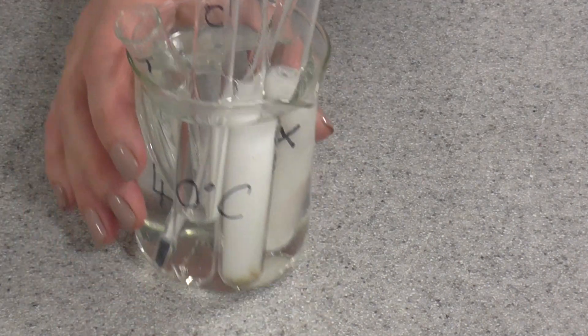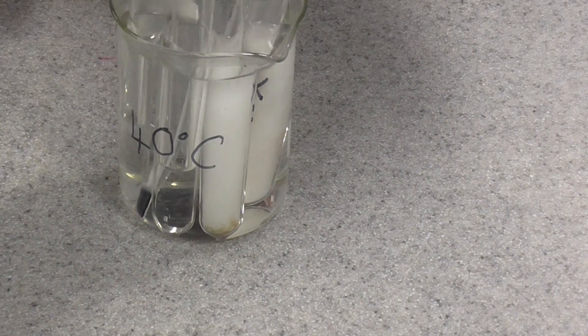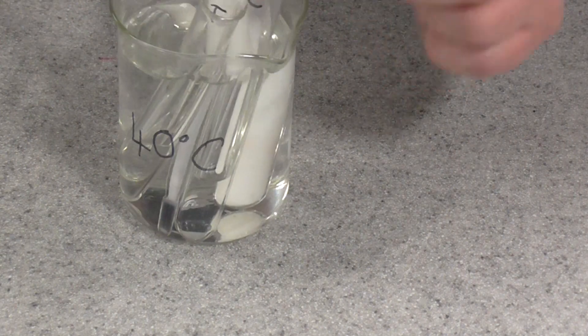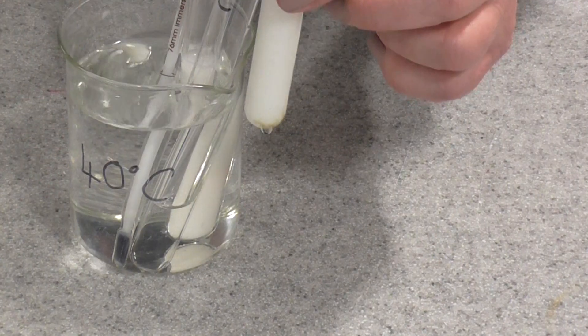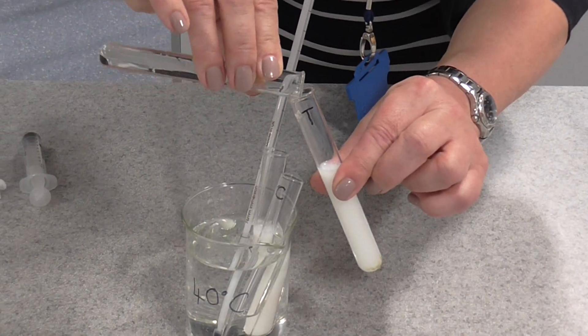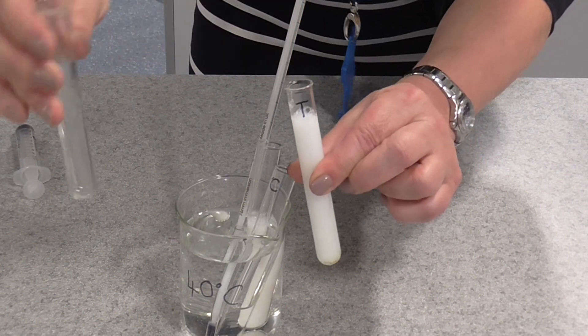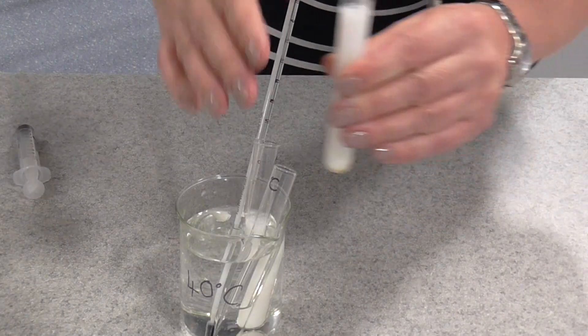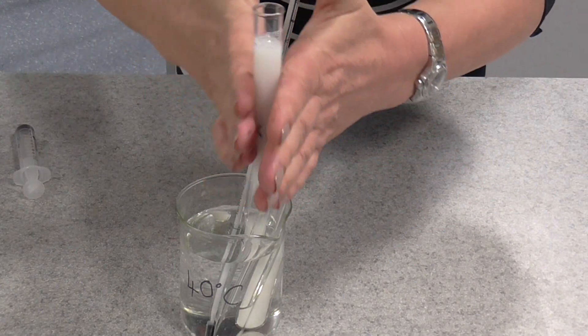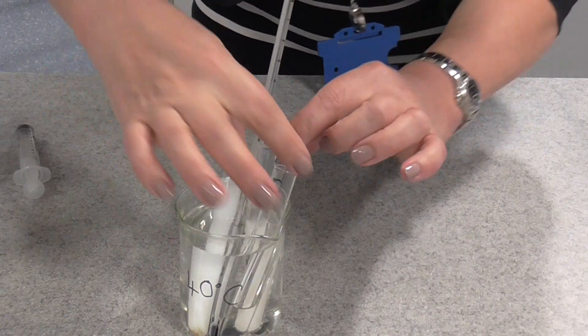The next thing we're going to do then, into our tube of milk labelled T, we're actually going to add the trypsin enzyme. We can get rid of that tube now. We're going to give it a little mix, and then we're going to place it back in the water bath.